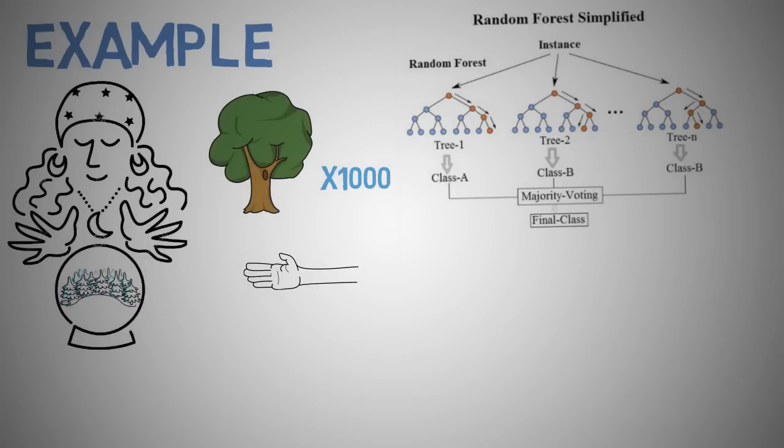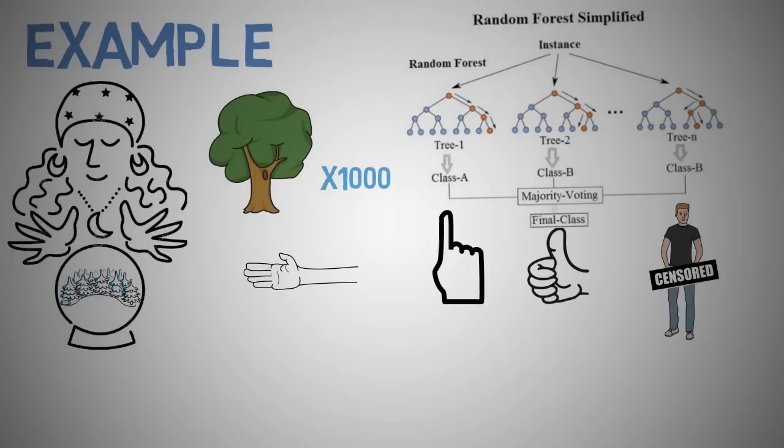For example, a finger. Suppose 100 random decision trees predict some 3 unique targets, such as a finger, thumb or maybe the nail. Then the vote of a finger is tallied out of 100 random decisions and likewise for the other two targets.